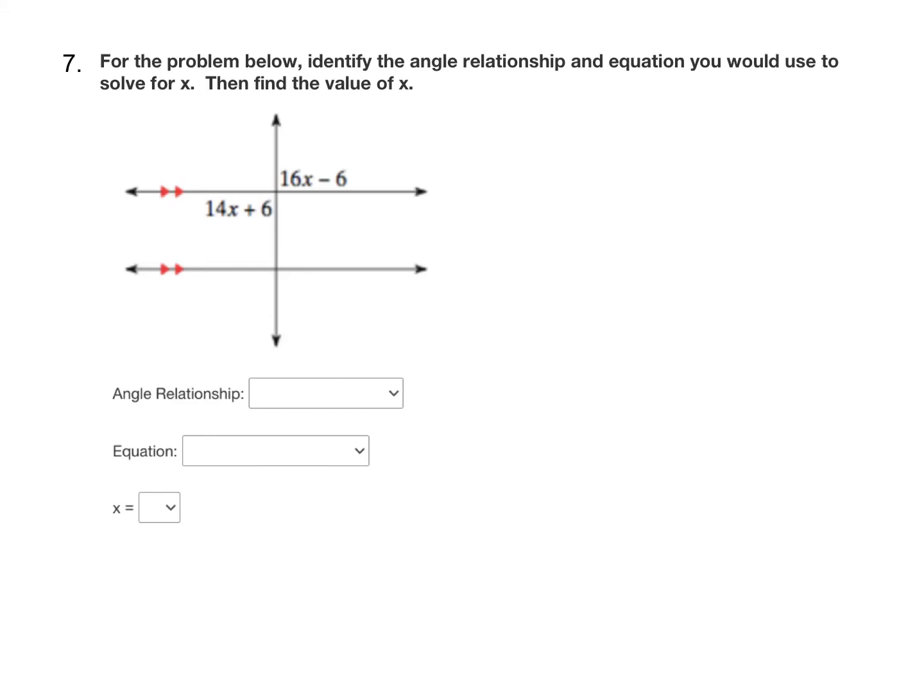All right, next for number seven, we again want to begin by identifying the angle relationship. You'll see that the two angles that are marked here with the 16x minus six and the 14x plus six are just a pair of vertical angles. They're on opposite sides of those two intersecting lines.